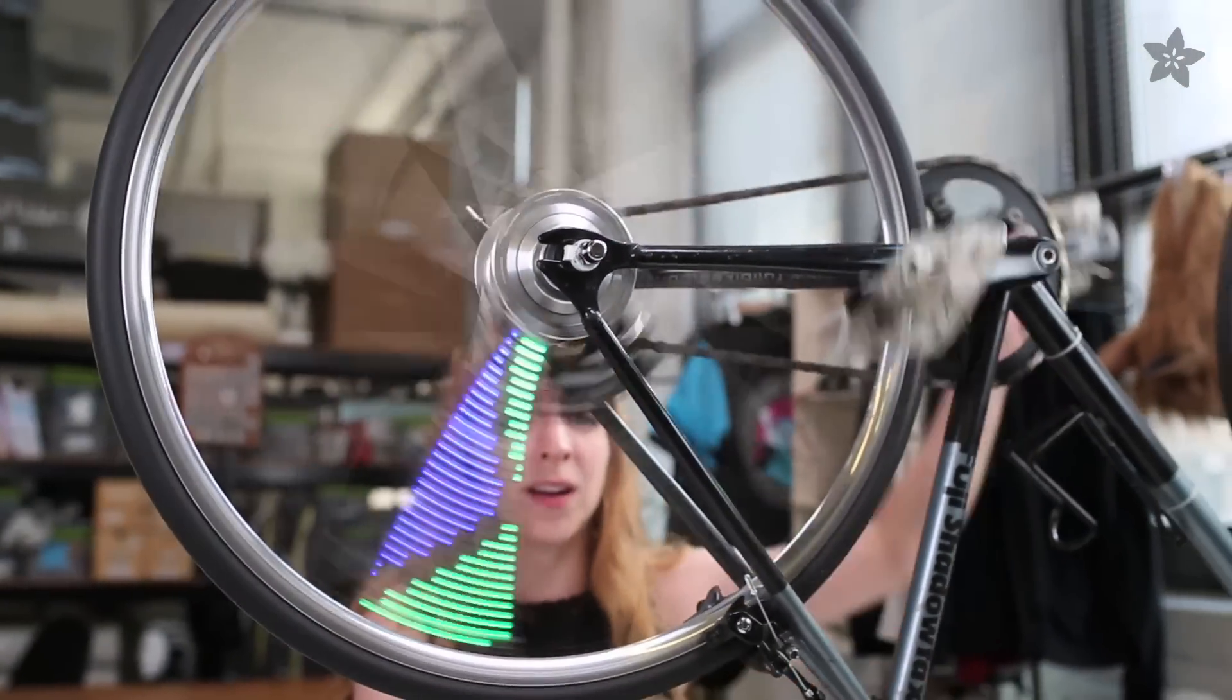Here's a fun project to light up your bike. Keep watching to learn how to use dot star LED strips and an Adafruit Pro Trinket microcontroller to make a persistence of vision display for your bike wheel.